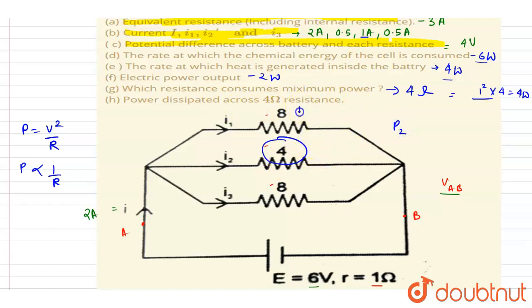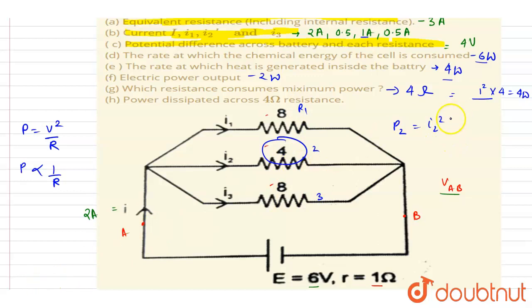The power dissipated across the 4-ohm resistance (R2) is i2² × R2. With i2 = 1 A and R2 = 4 ohms, the power is 1² × 4 = 4 watts, as we have already seen.